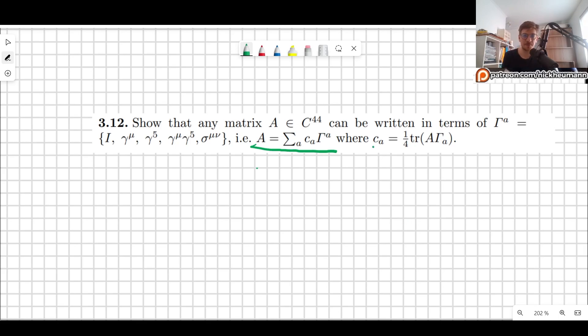And basically we want to also find what this constant is. So the way to go about it is say, let's say we have A, which is any 4 by 4 matrix, and we want to actually show that we can write it as sum over A of some constant times this gamma A, so the gamma matrices. So we want to make sure that this exists. We can actually find some c_A. That is the whole point of this.